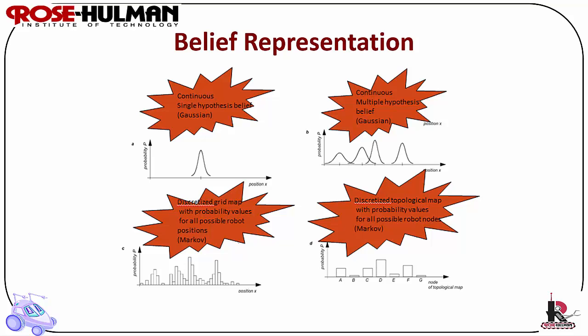One geometric approach is multi-hypothesis representation to identify the possible positions of a robot. In Markov localization, you represent the robot's belief by a probability distribution of a possible position and use Bayes' rules and convolution to update the belief whenever the robot senses or moves.